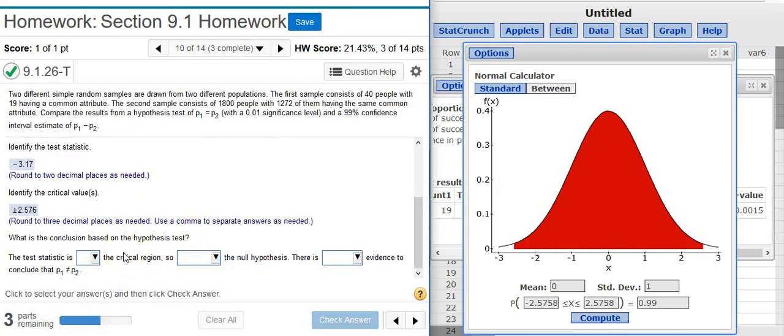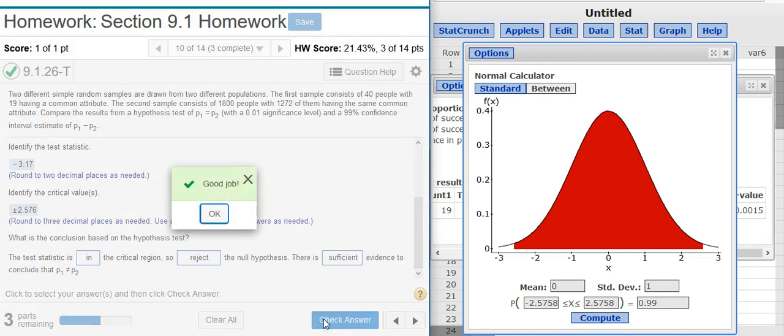Now the next part asks for a conclusion based on the hypothesis test. We're asked to use the test statistic to evaluate the hypothesis test, and that's easy enough to do. So here we have our critical values, plus or minus 2.57. So that's going to be the edge here of this red area. The test statistic itself, negative 3.17. Well, negative 3.17 is located here on the number line, which is inside the left tail of our critical region. Since we're inside the critical region, we're inside the region of rejection, and therefore we reject the null hypothesis, because we're in the region of rejection. So the test statistic is in the critical region, so we reject the null hypothesis, and whenever we reject the null hypothesis, there is always sufficient evidence. Good job!